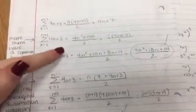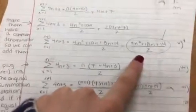And then you're just going to find the common denominator so you can add the two together. And this is what I got right here. 4n squared plus 18n plus 14 over 2.